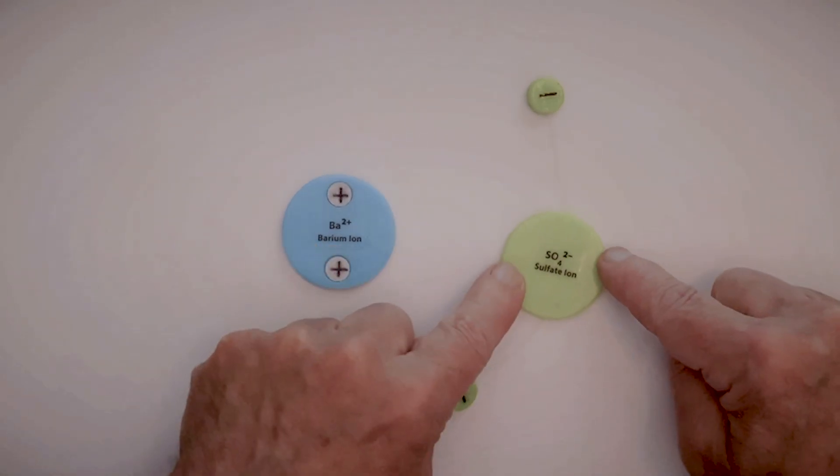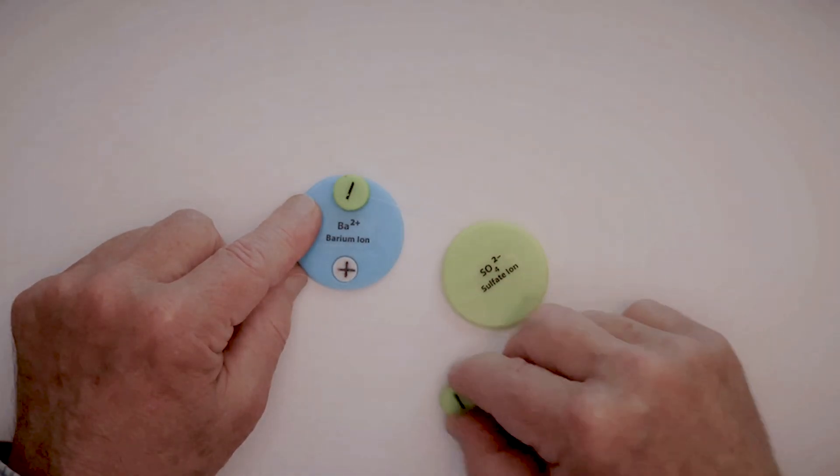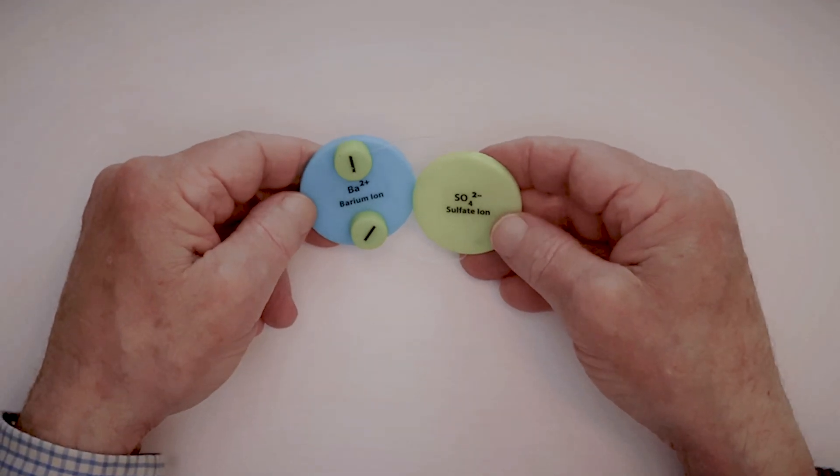So we've got barium ion, we've got sulfate ion using the ionic bond disk model, and you can see it sticks together. Isn't that cool? So you can see, barium sulfate.